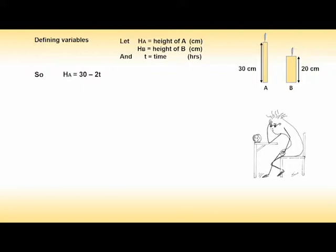In one hour candle A decreases its height by 2cm, so in t hours its height decreases by 2t, giving the height remaining as 30 minus 2t. In one hour candle B decreases by 0.5cm, so in t hours its height decreases by 0.5t, giving the height remaining as 20 minus 0.5t.